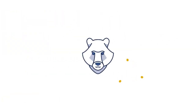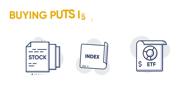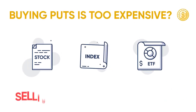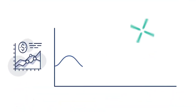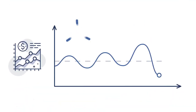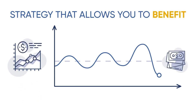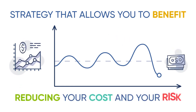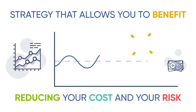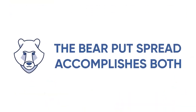Have you ever been moderately bearish on a stock index or ETF, but think buying puts is too expensive and selling short is too risky? If you are moderately bearish, there's an option strategy that allows you to benefit when the underlying drops while reducing your cost and your risk. The bear put spread accomplishes both.